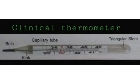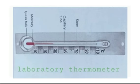In the picture, the kink you see helps to preserve readings by not allowing mercury to flow back. A clinical thermometer should never be washed with very hot water or placed in the sun, as it is likely to break.